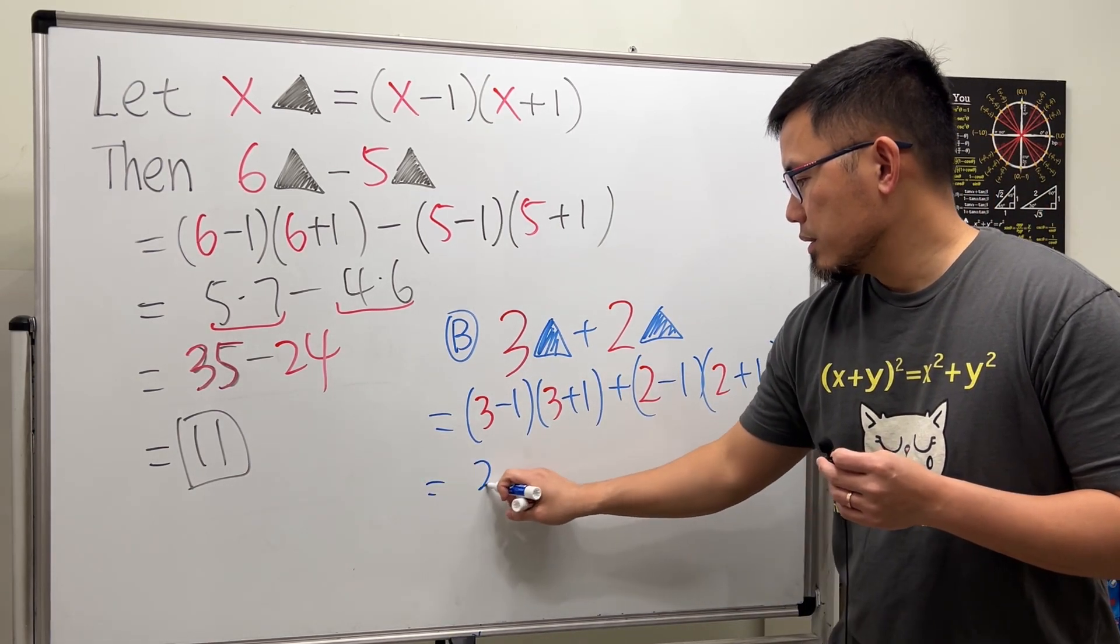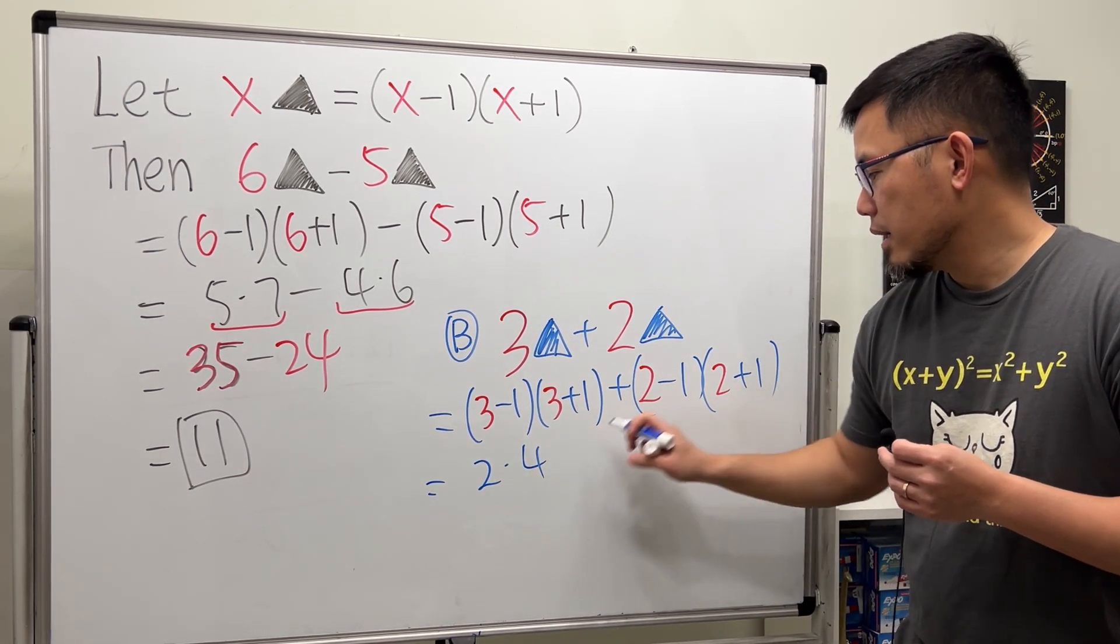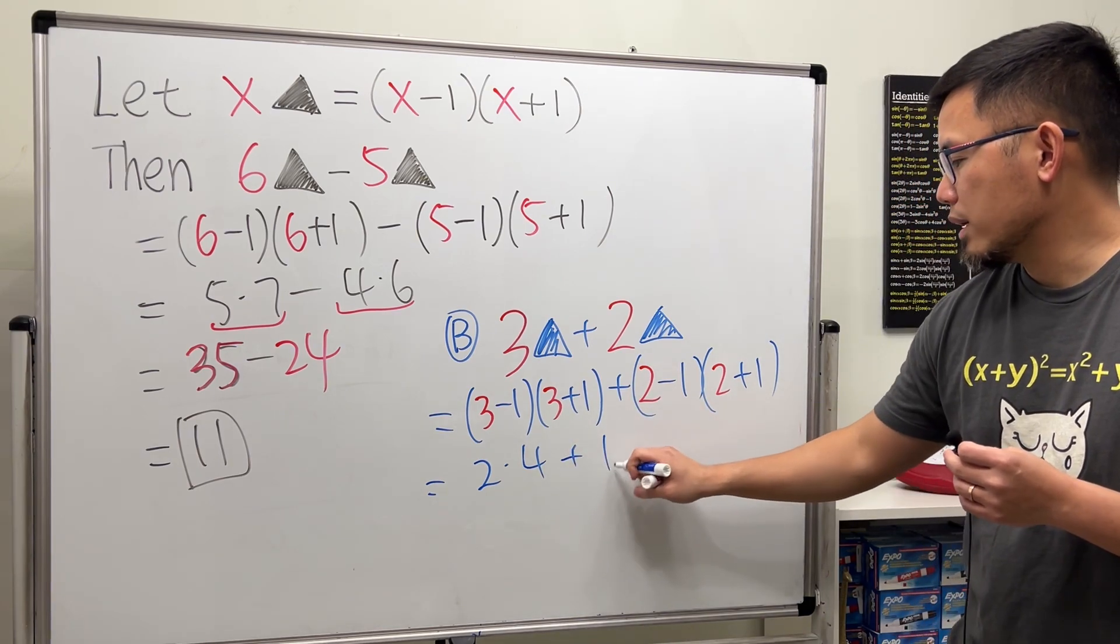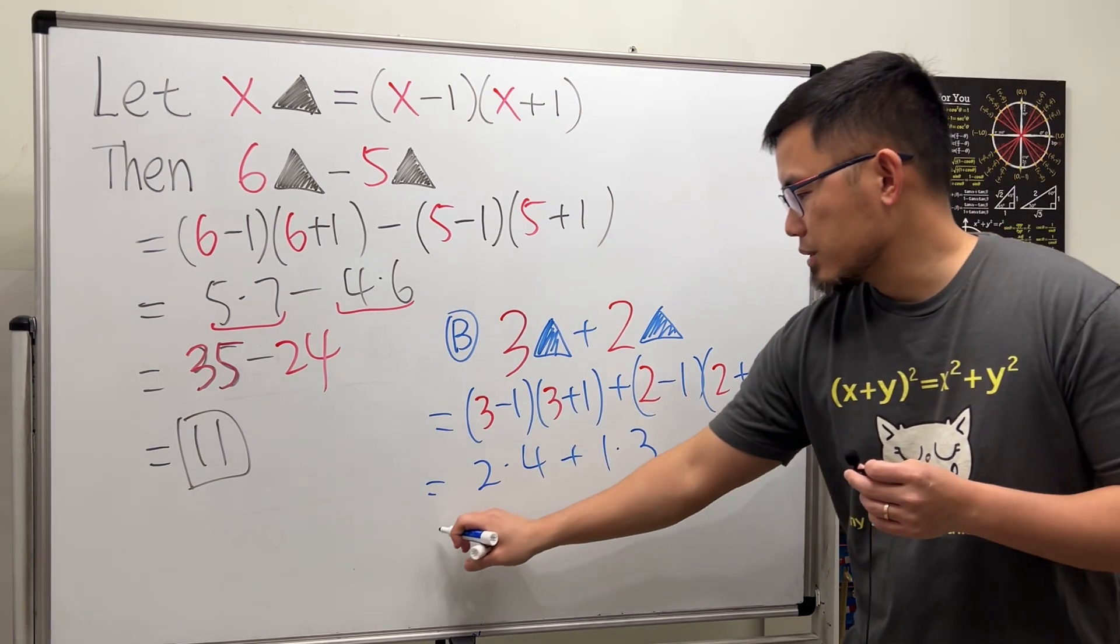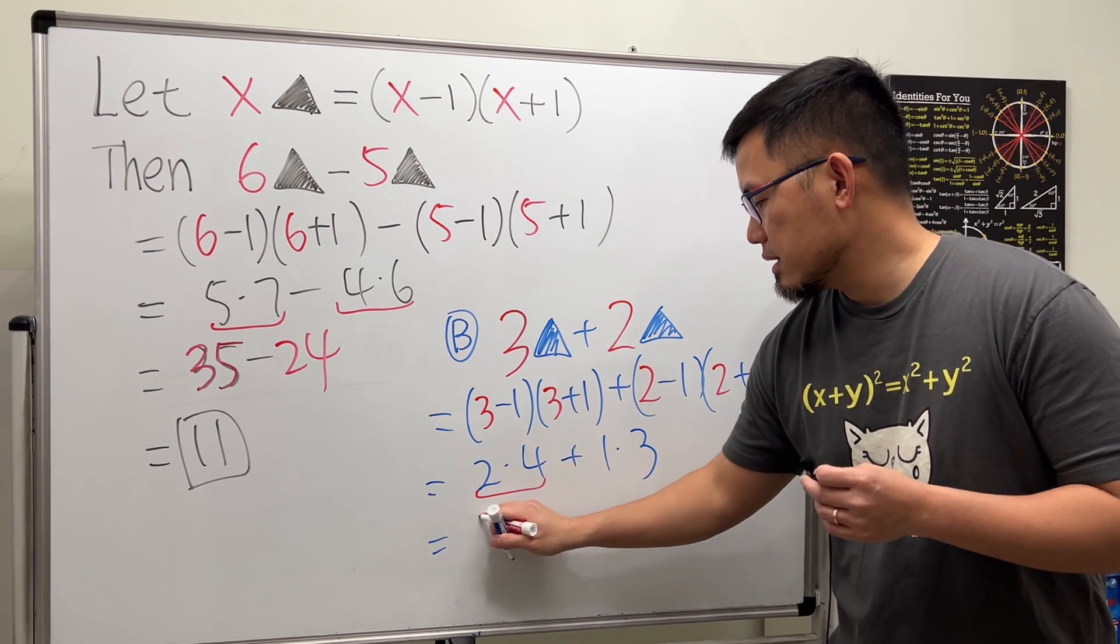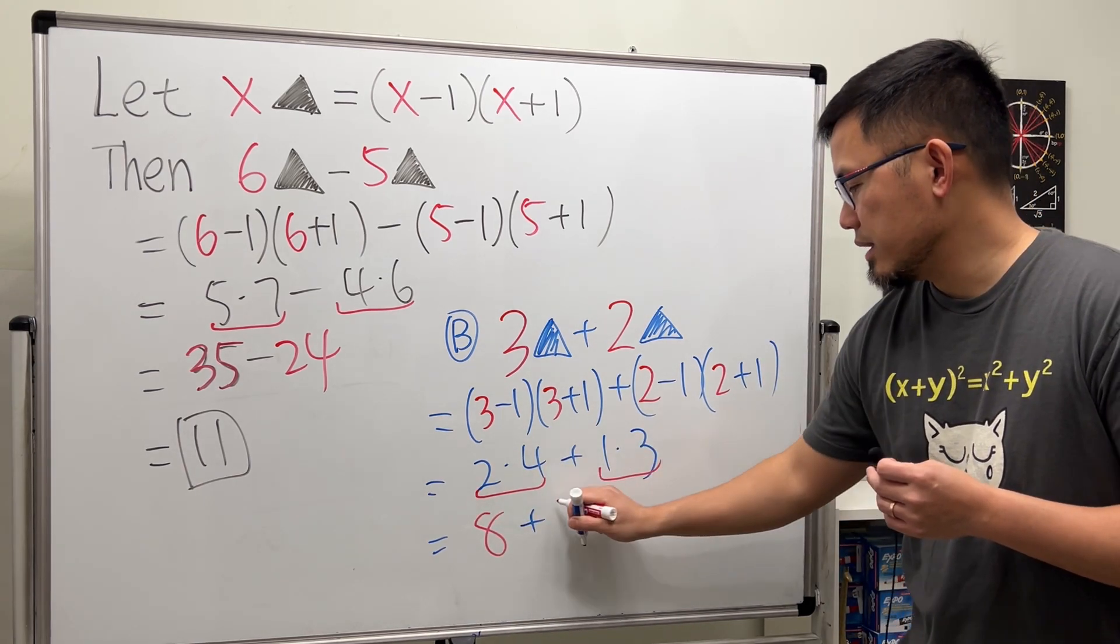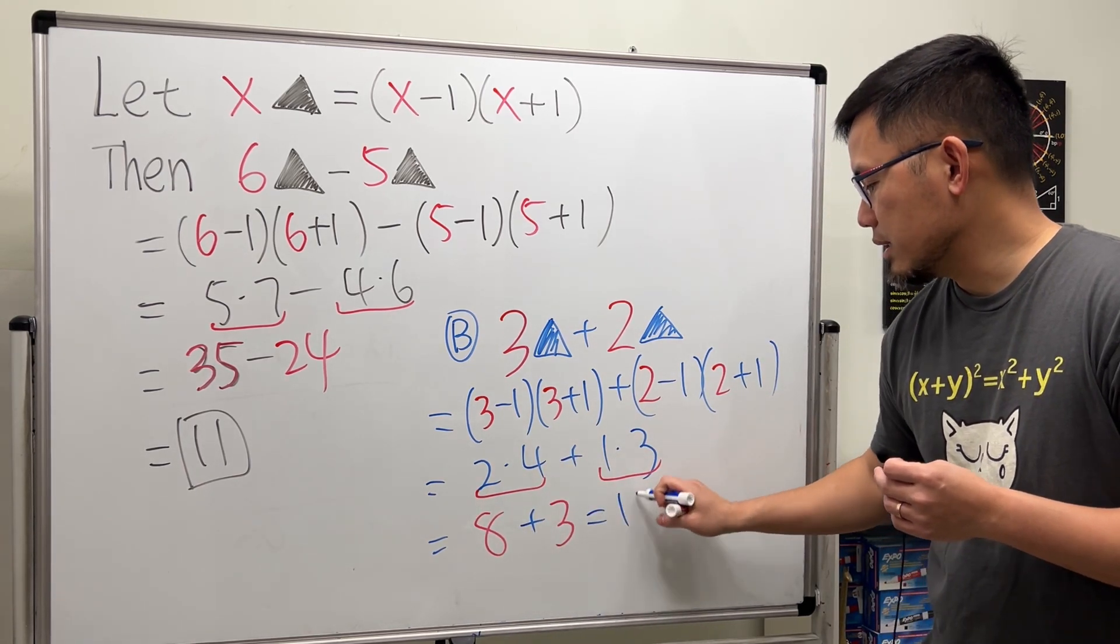This is 2 times 4, and we add this, which is 1 times 3. So here is 8, plus here is 3, so we also end up with 11.